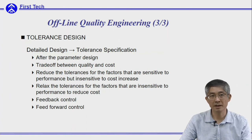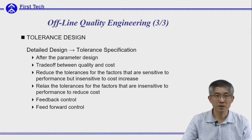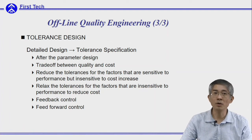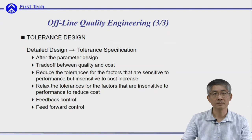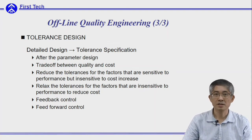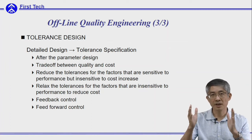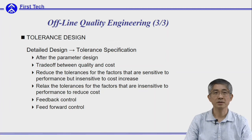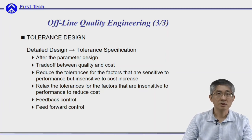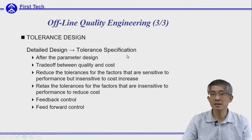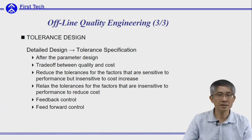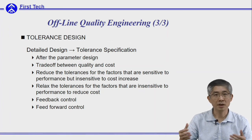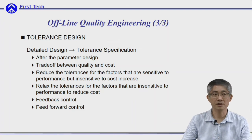The last stage is called tolerance design. Tolerance control is very expensive, so Taguchi suggests you use tolerance design only after you have finished the parameter design, and minimize the sensitivity to errors. There will be a trade-off between quality and cost, since in most cases you need to invest higher cost to reduce the variability of variables. So you need to reduce the tolerance for variables that are sensitive to the output, but not sensitive to cost increase. For those factors that are not sensitive to output, we can even relax the tolerance to reduce cost. There are also other techniques such as feed-forward and feedback control.